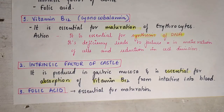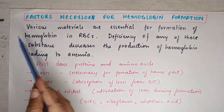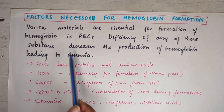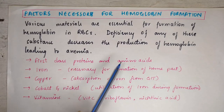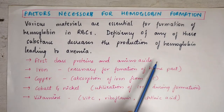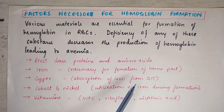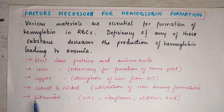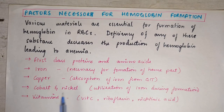The factors necessary for hemoglobin formation include proteins and amino acids; iron, which is required for formation of the heme part; copper, which is required for absorption of iron from the gut; cobalt and nickel, which aid in utilization of iron; and vitamins including vitamin C, riboflavin, and nicotinic acid, all of which are necessary for hemoglobin formation. Deficiency of any of these substances decreases hemoglobin production, leading to anemia.